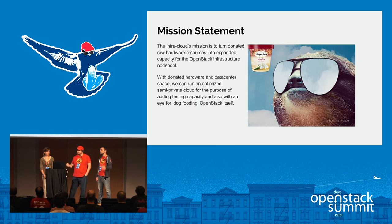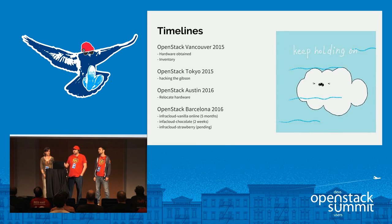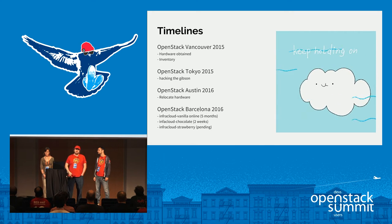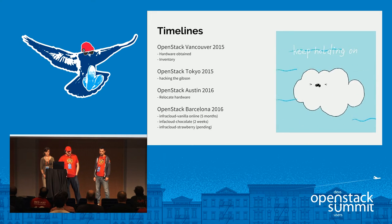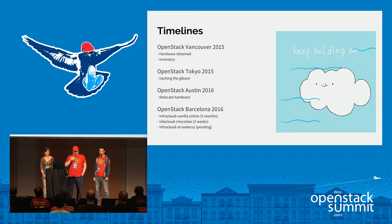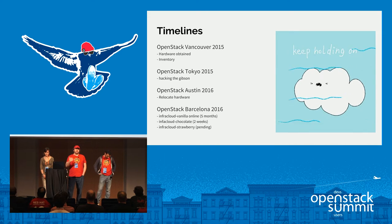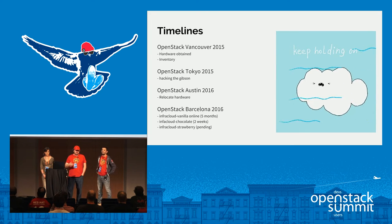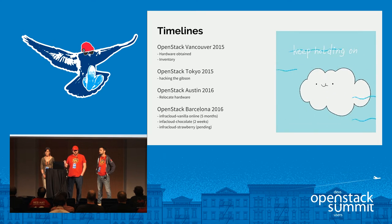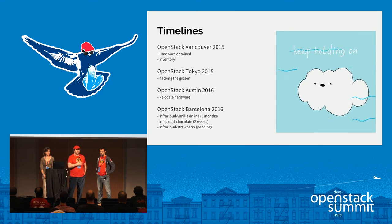For the timeline: in Vancouver in 2015 we got and inventoried the hardware — this was used hardware, so hard drives needed replacing, networks were misconfigured, bootloader issues and so on. In Tokyo we started writing puppet modules and Ansible manifests. Between Tokyo and Austin we had a mid-cycle where we brought the first cloud online and ran a job on it, but shortly thereafter we had to move the hardware to another data center. Between Austin and now we had a mid-cycle in Germany where we brought our first cloud online, which we call vanilla, and as of today we have chocolate, our second cloud, which came online about two weeks ago.